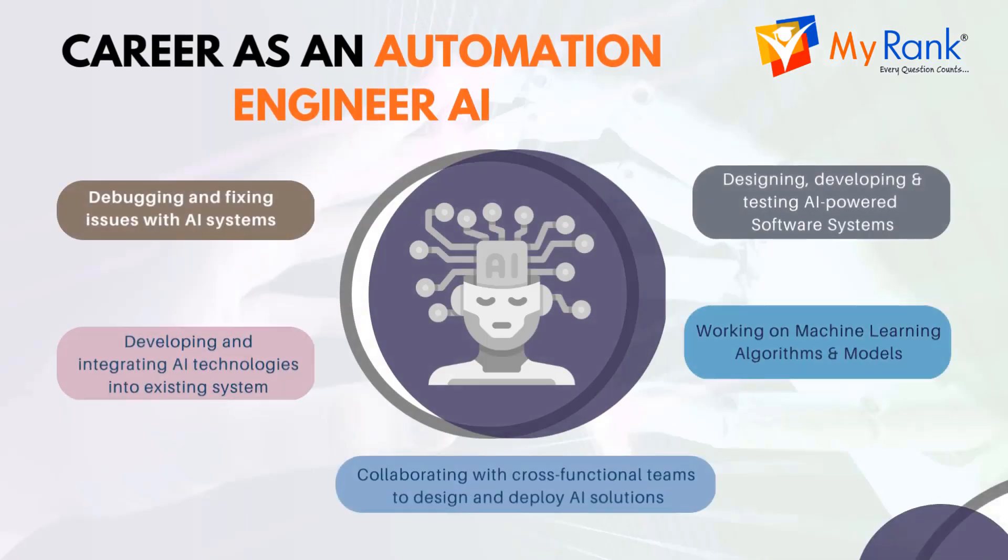A career as an automation engineer in AI involves designing and implementing automation solutions using AI technologies. Key responsibilities include designing, developing, and testing AI-powered software systems, working on machine learning algorithms and models, developing and integrating AI technologies into existing systems, debugging and fixing issues, collaborating with cross-functional teams, and monitoring system performance. Top companies that hire AI and automation engineers include Google, Amazon, Microsoft, IBM, Facebook, Apple, and many others.